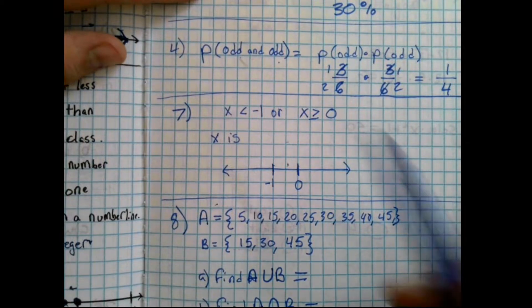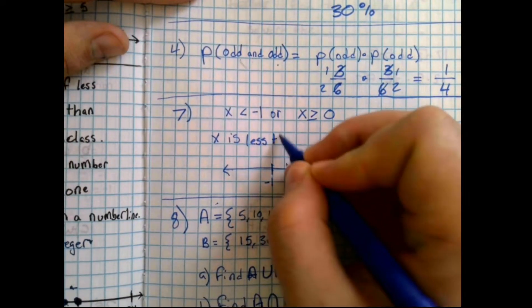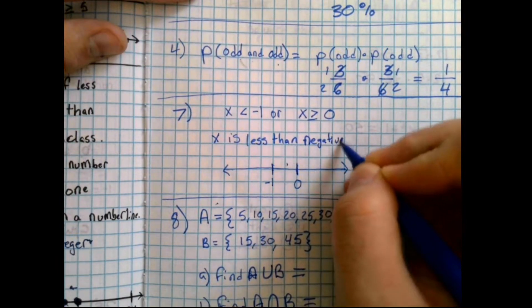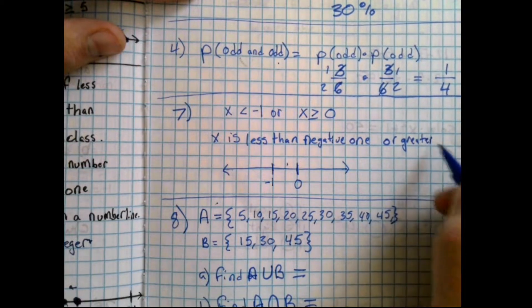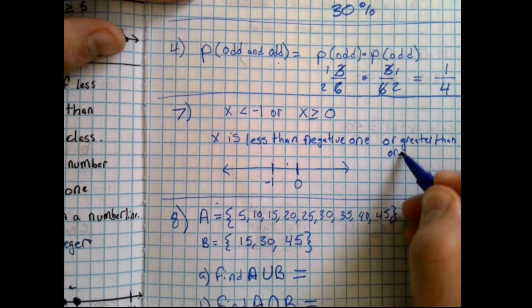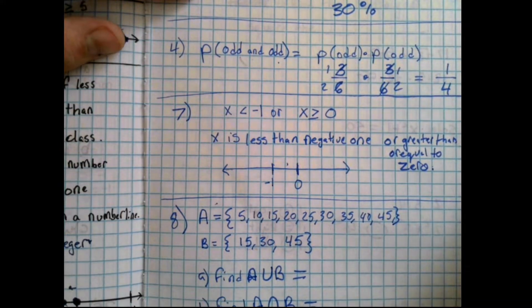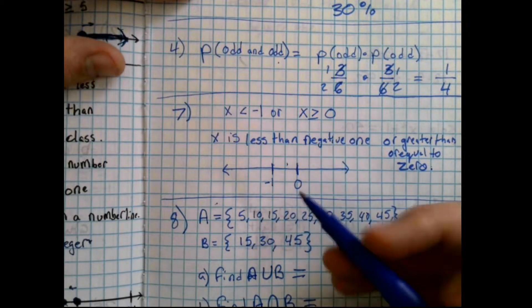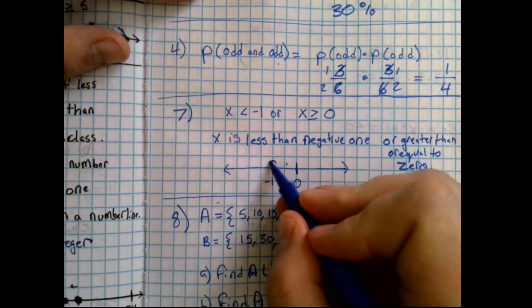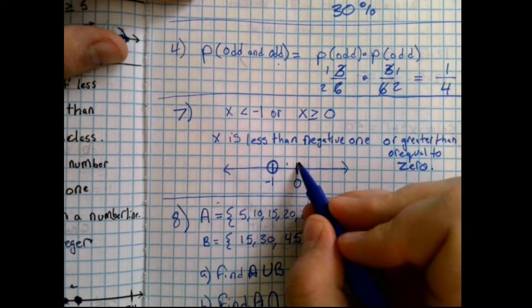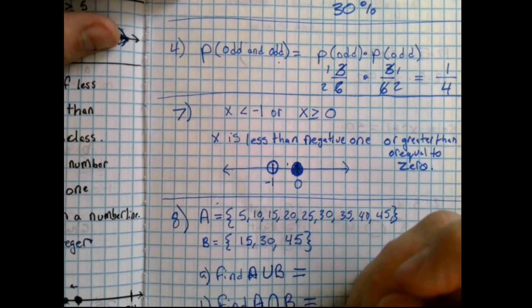Question 7 asks us to write this inequality in words. Now, this is x is less than negative 1, or greater than or equal to 0. We don't have to write x a second time because we're talking about the same x. Now, it is a less than on the negative 1, so you're going to put an open dot. It is a greater than or equal to on the 0, so you're going to put a closed dot because of the equal to. Now, from here you need to know which direction these two go. Draw your arrows.